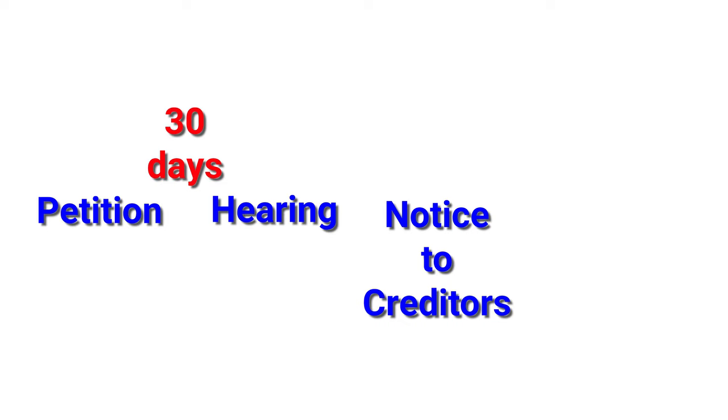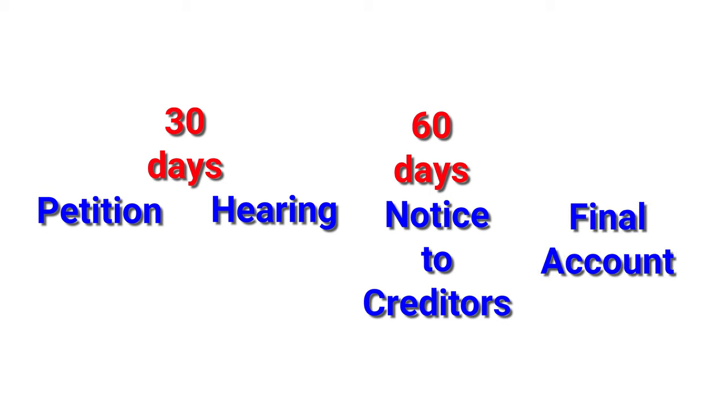Now, I went through this quickly, but if you notice the time frame: the very first thing we had to file was a petition, which might be 30 to 40 days before the first hearing. Then we have to file notice to creditors — let's say 60 days for creditors to come forward. That's already three months. Then we do the final account and have to wait at least another 30 days. You're looking at a minimum of four months to finish a probate, depending on where you are, if everything goes smoothly.